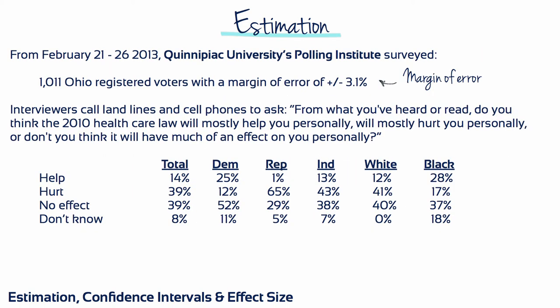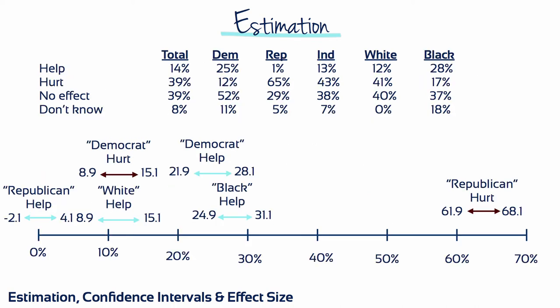In February 2013, Quinnipiac University's Polling Institute surveyed 1,011 Ohio registered voters, asking whether the 2010 healthcare law would mostly help them personally, mostly hurt them personally, or not have much of an effect on them personally. This figure represents some of the interval estimates that infer how the Democratic, Republican, Independent, White, or Black populations of Ohio would respond to this question.